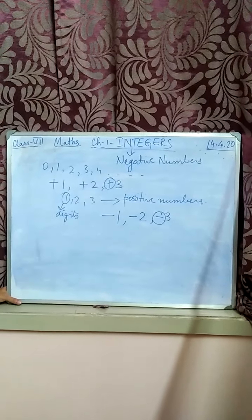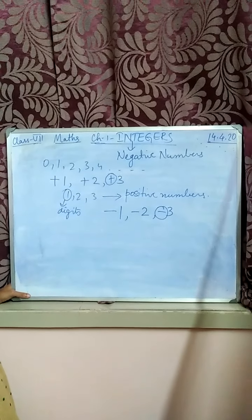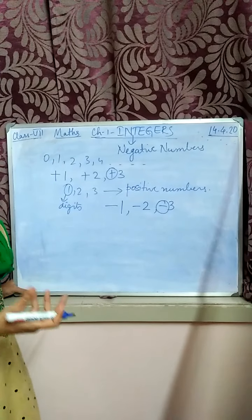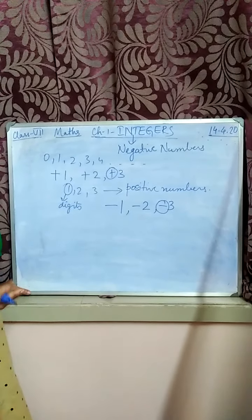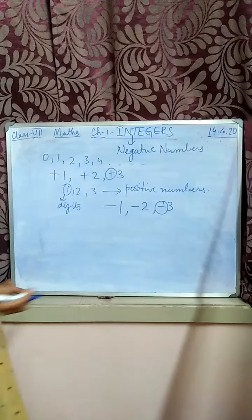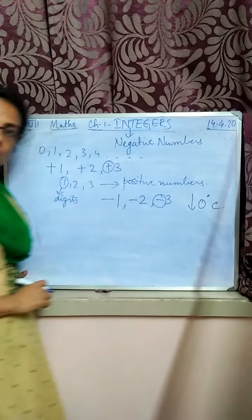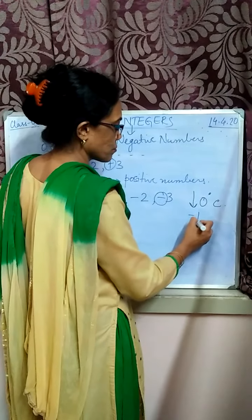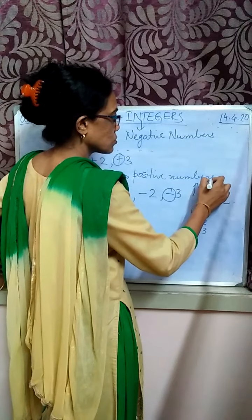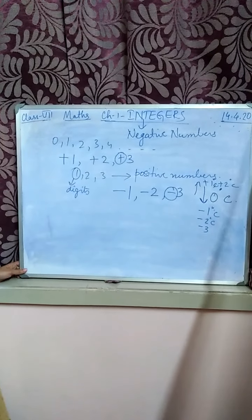Suppose in day-to-day life, you are keeping ice. Whenever you put water in the freezer, it gets converted to ice. That you are already studying in physics. Now this ice is having a temperature below 0 degrees. Below 0 degree Celsius, you count with plus 1 degree Celsius, 2 degree Celsius going up. And below zero, you count as minus 1 degree Celsius, minus 2, like this.